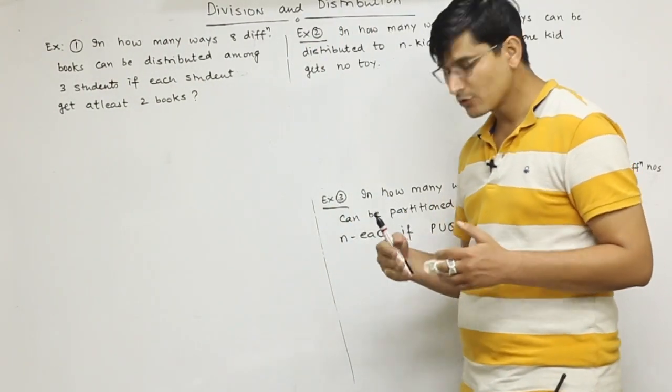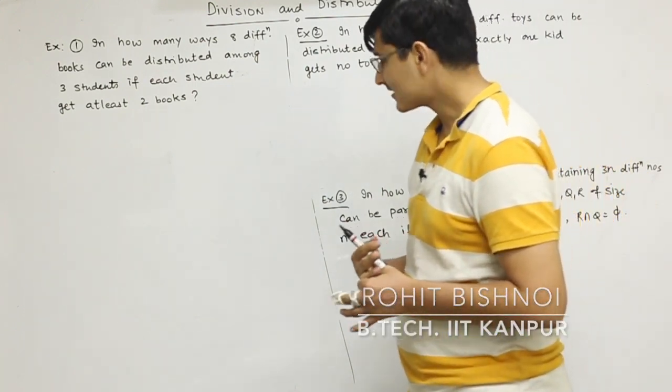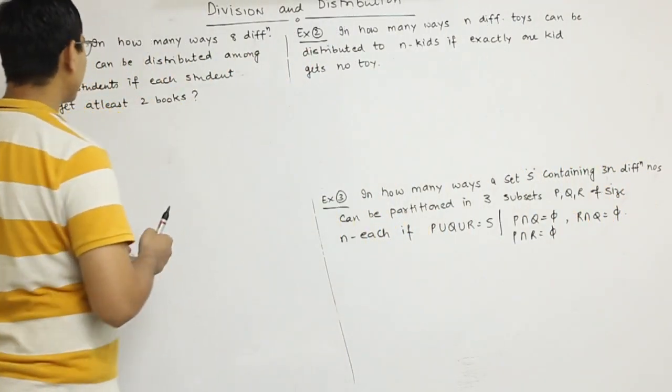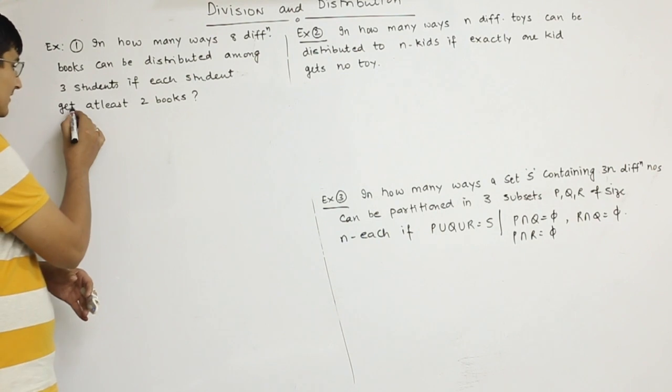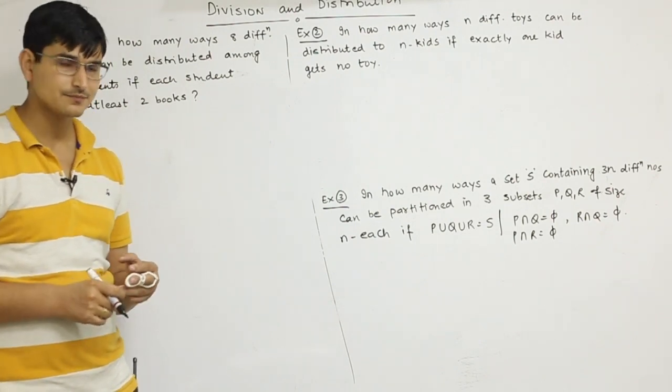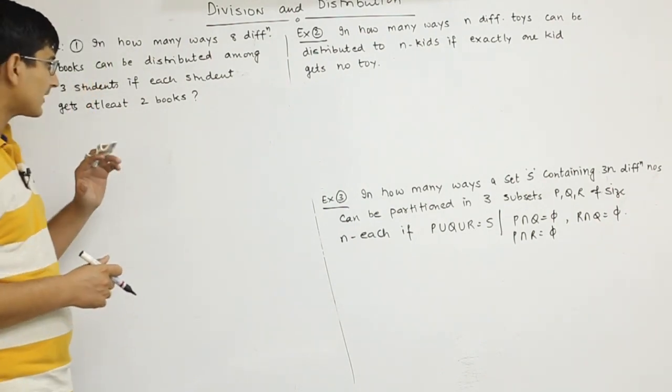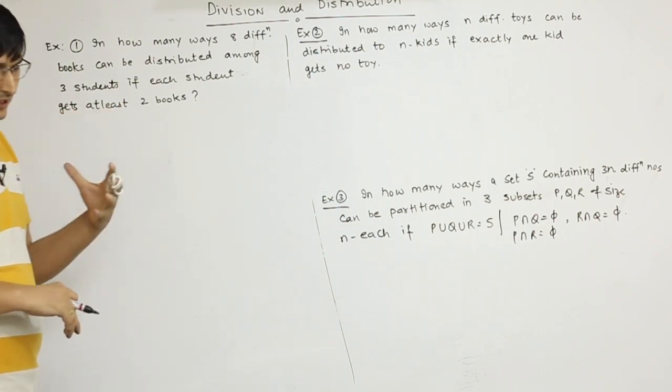Okay, so let's do some examples from division and distribution. Example number one says: In how many ways can eight different books be distributed among three students if each student gets at least two books? So we can do two books to each one, we can do three books, right? So we can do eight books distributed.